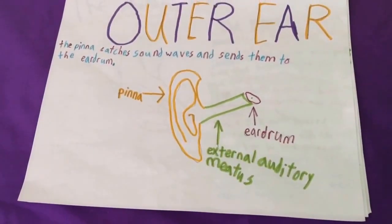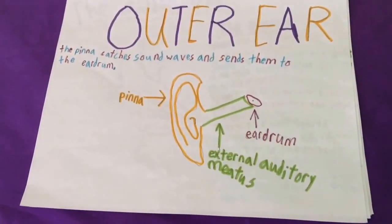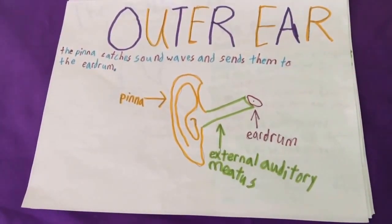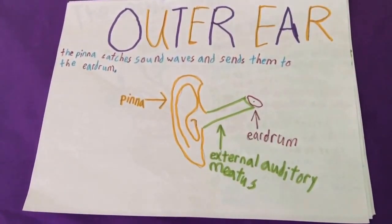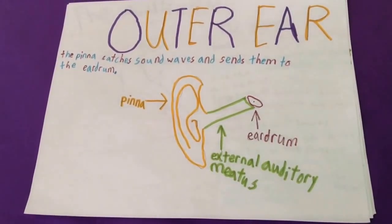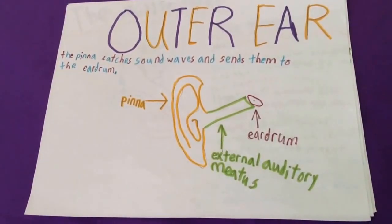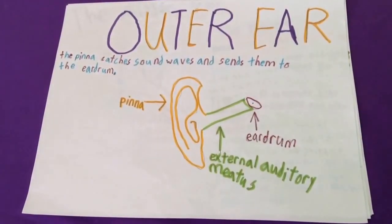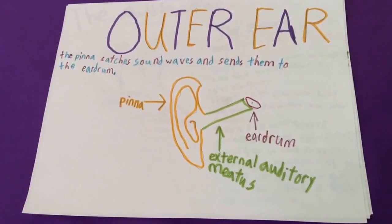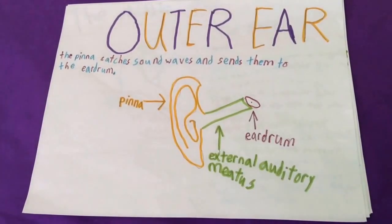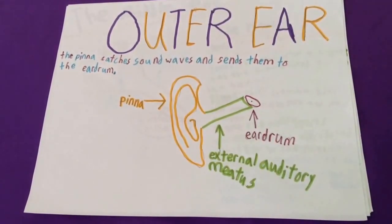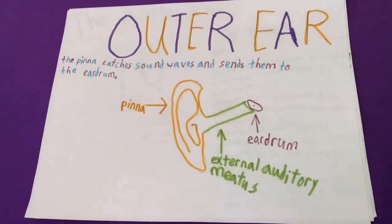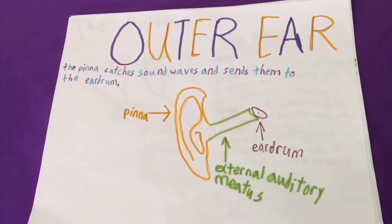The outer ear is called the pinna, and it's also made out of cartilage. The pinna catches sound waves and sends them to the eardrum through the external auditory meatus.